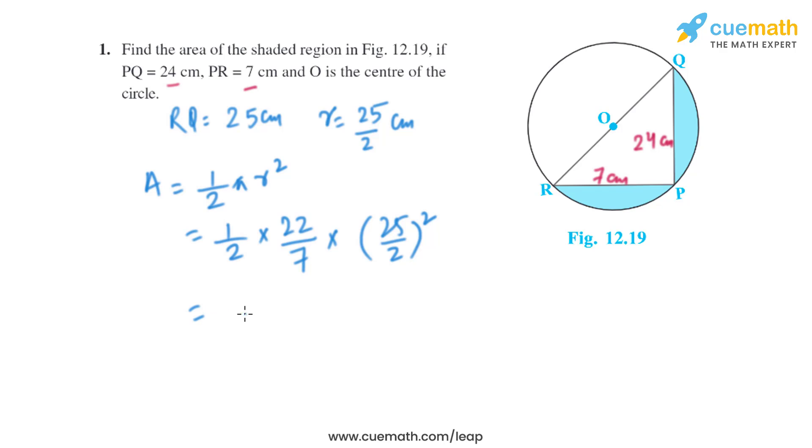On solving this, we'll get the area of the semicircle as 6875 divided by 28 square centimeters. So we have got the area of semicircle, let's name it as AS.